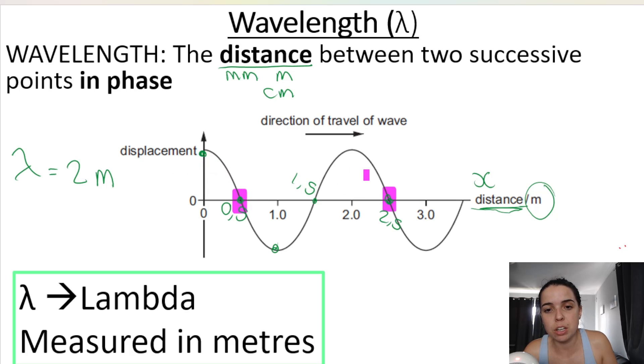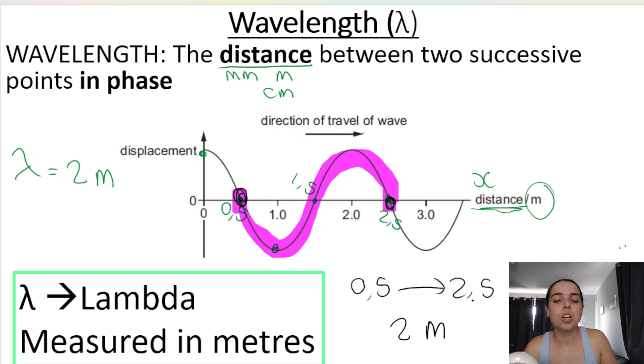Those are in phase. They both come directly after a crest, directly after the next crest. If I join them, that represents one wavelength, from that point in phase to that point in phase. How do you get from 0.5 to 2.5? What's the difference between 0.5 and 2.5? 2 meters. So no matter how we calculate it, no matter which two successive points in phase we use, we get our wavelength to be 2 meters.